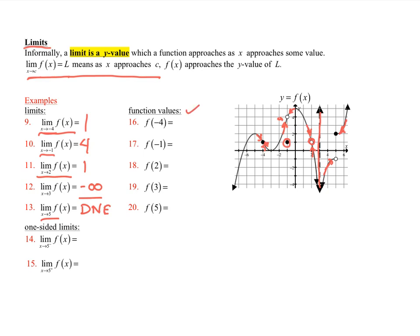Function values are different — it's what is actually at that x-value. f(-4) is the point 1, and notice the limit equals this value. f(-1) is the point 1, but the limit there was 4, so these two are two different things — we'll talk about continuity in a bit. f(2) does not exist; there's a hole. f(3) does not exist because it's a vertical asymptote. f(5) does exist; it's that point right there, which is 2.